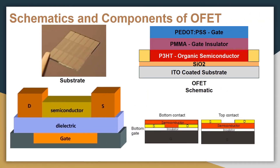The normal thin film OFET has several layers. The bottom is indium tin oxide (ITO) coated glass. We use ITO to coat the glass because we want the substrate to have good conductivity and good light transmission properties. Then we coat P3HT as the organic semiconductor. Above the organic semiconductor is a gate insulator made of PMMA. The top layer is PEDOT:PSS gate, due to its unique combination of conductivity, transparency, ductility, and ease of processing.